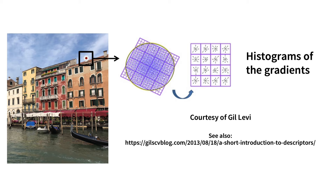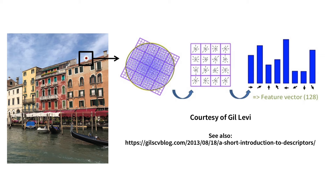Around the key point, in a 4 by 4 region, you compute histograms — that's 16 histograms in total. Each histogram is discretized in 45-degree orientation bins, meaning it has 8 bins. This gives you 128 values, which you concatenate into your descriptor vector. This is the SIFT descriptor used to describe the local key point.